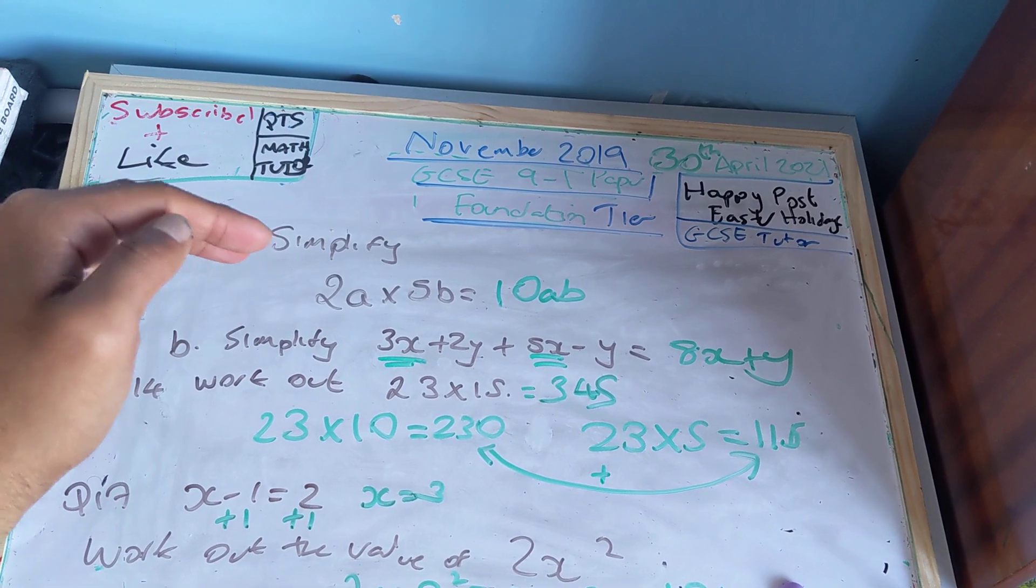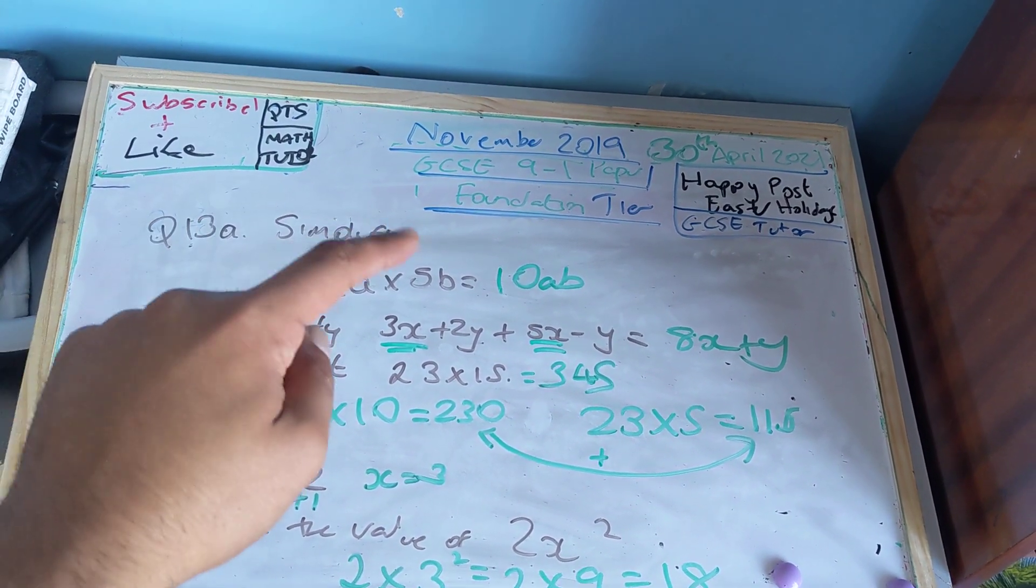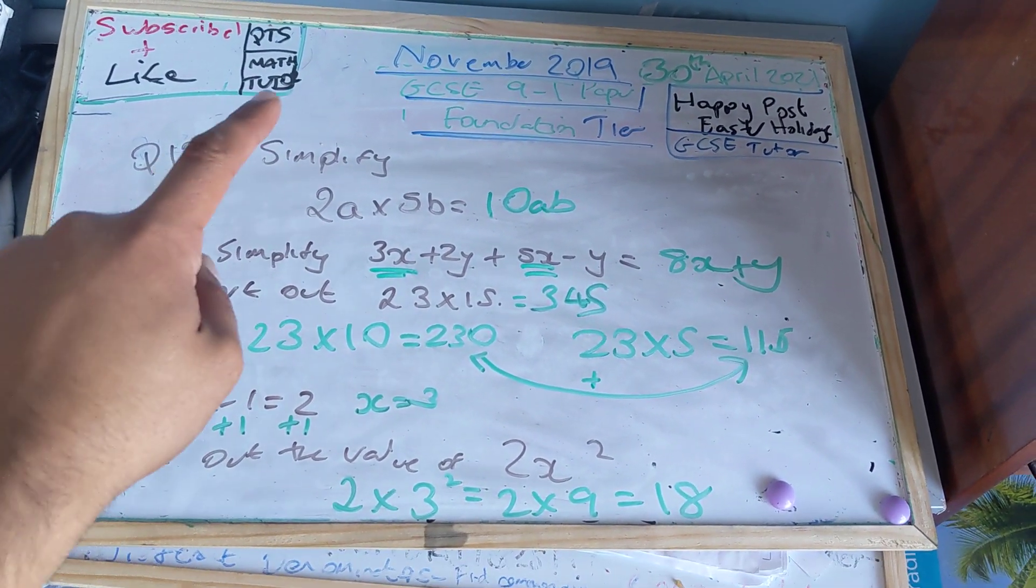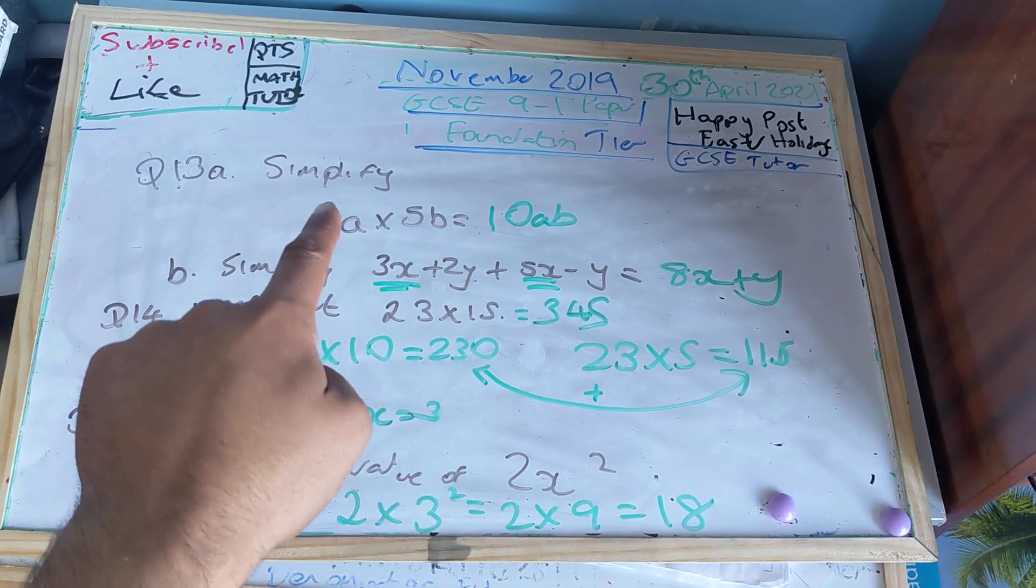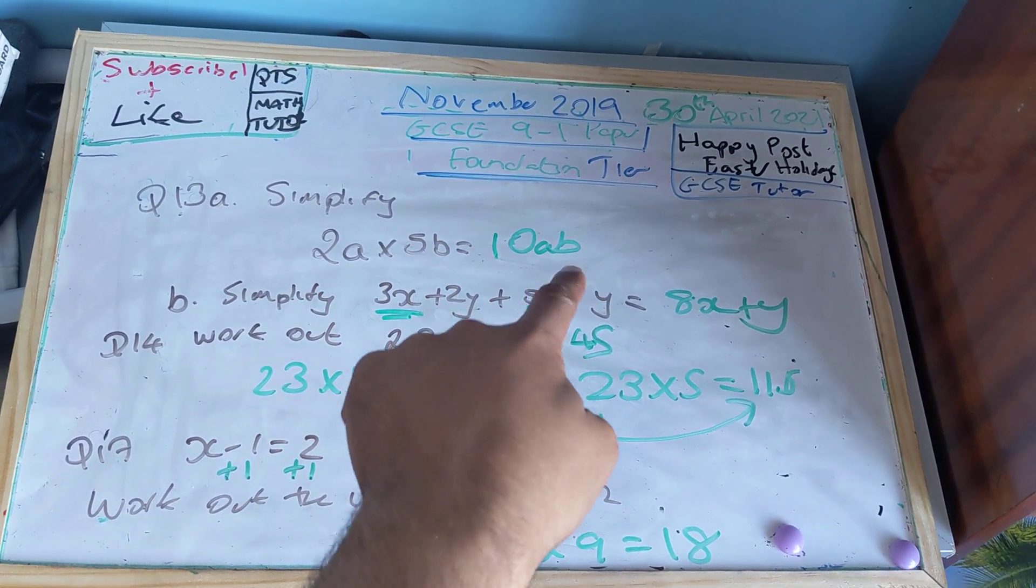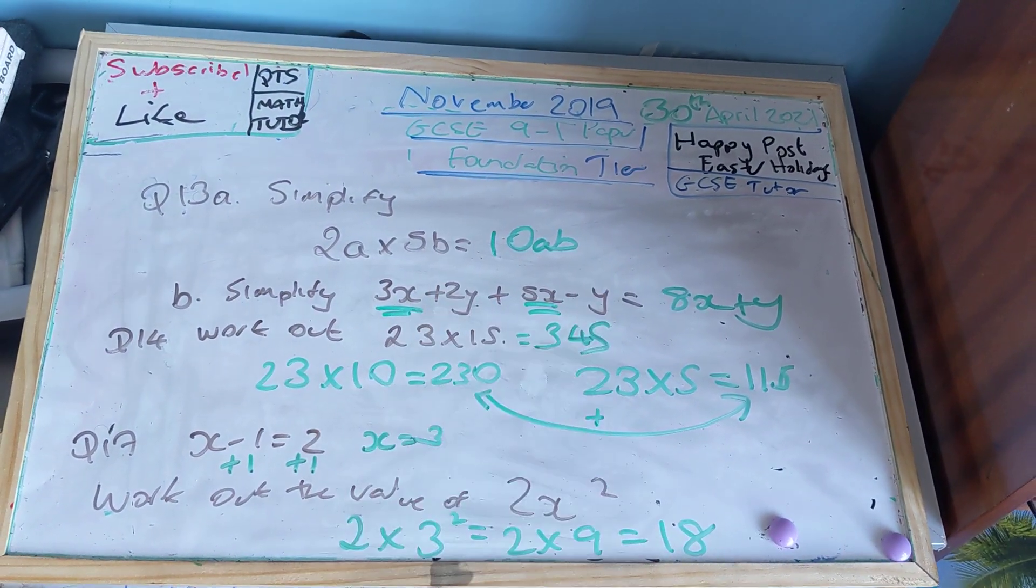In today's video, question 13A says simplify 2A times 5B. Well, 2 times 5 is 10, A times B I can write it as AB. So my final answer is 10AB.